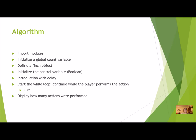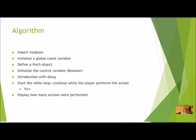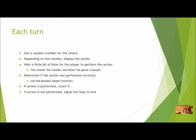When the loop ends, display how many actions were performed — like 'you did 16 right' — just like Bop It does. In each turn you need to get a random number for the action choice. Think about the range of random numbers you need and how you can verify you're in that range — that's an important step. Then, depending on the random number, display the action. For example, if one represents beak up and two represents beak down, you'll use if statements to print what they need to do.